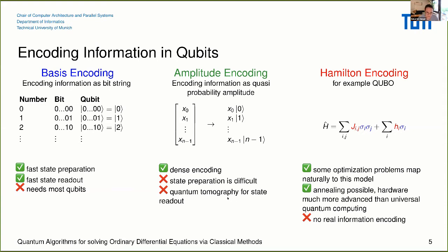In the last two years there has been a lot of progress for certain PDEs to make state preparation and quantum tomography faster, making algorithms more applicable to real-world cases. Another encoding is Hamiltonian encoding, where you do not put information directly into the system, but instead specify an optimization problem on the quantum computer such that the solution is given in the eigenstate of the lowest energy level of the Hamiltonian. This is useful because many optimization problems map naturally to it, and currently you can use quantum annealers to solve them.